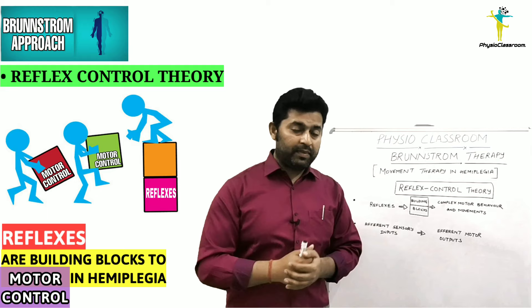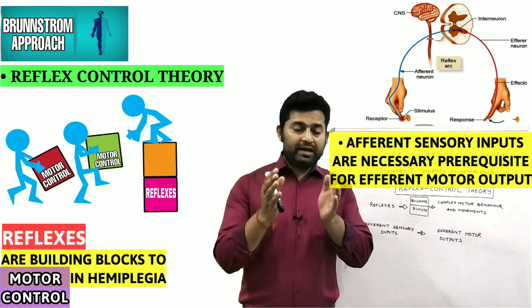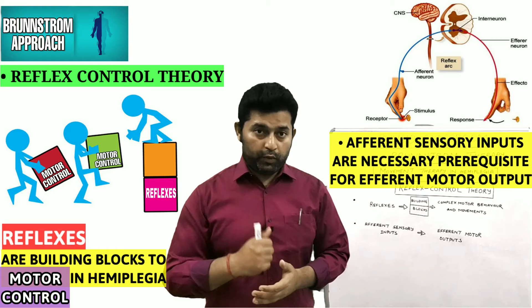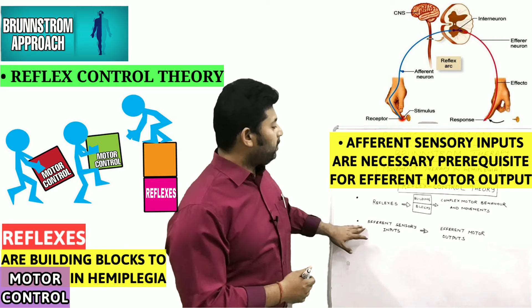The reflex control theory states that reflexes are the building blocks of complex motor behavior and movements. The second important point is that afferent sensory inputs are the necessary prerequisites for producing an efferent motor output. Let's take an example to understand how this theory of motor control can be utilized in treating a hemiplegia patient.